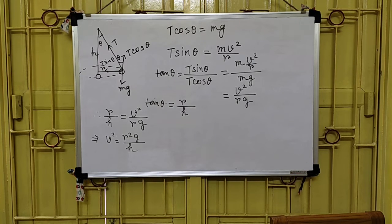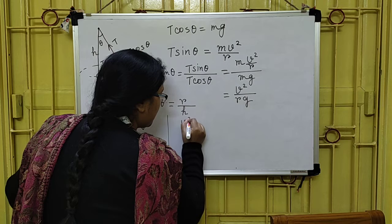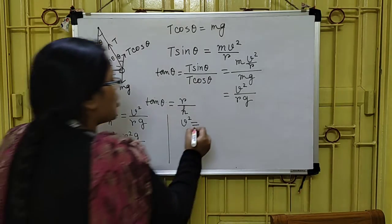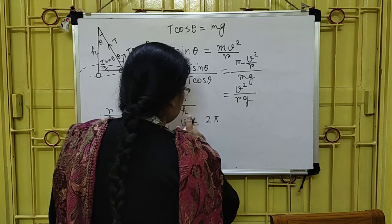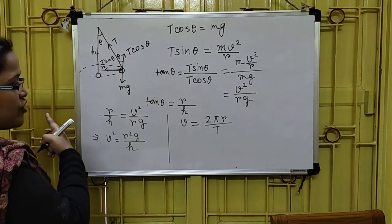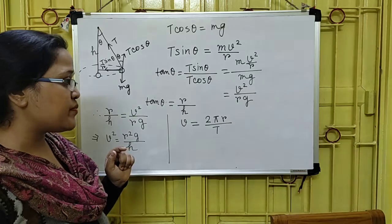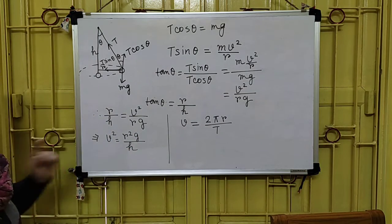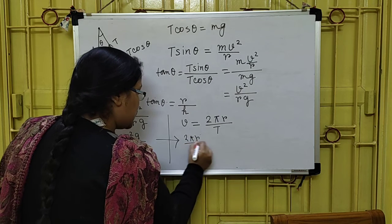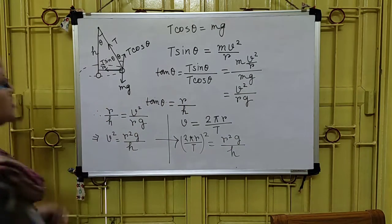Now, the time period of revolution and linear velocity have a relation. We know that V = 2πR / T, where 2πR is the total circumference of the circular path and T is the time period. So substituting, (2πR / T)² = R²g / H.